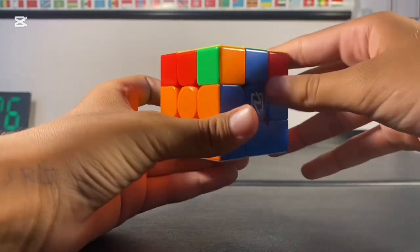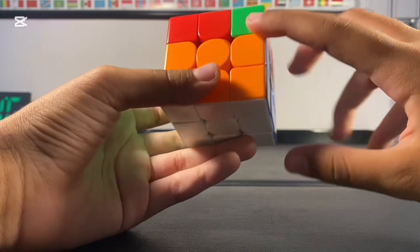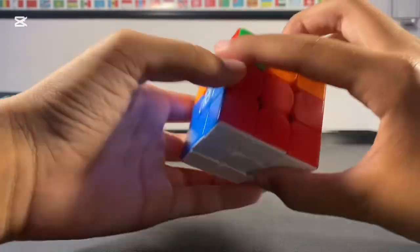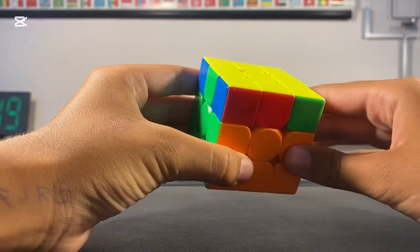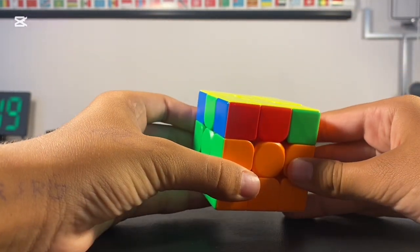Finally, there is only one step left. The permutation of last layer, which means to put all the stickers in the right place. This is a 2-look method. Firstly, you permute the corners. There are two cases to that.